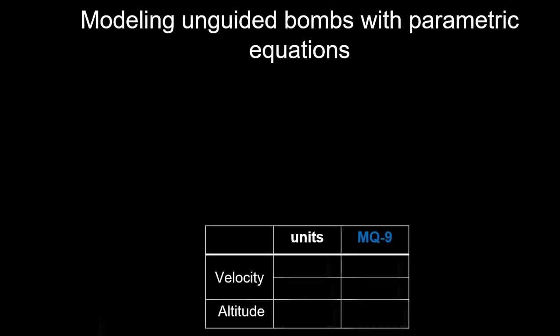So first, a couple stats for an MQ-9. Typical velocity would be around 180 miles per hour. We're going to go ahead and convert that into feet per second because that's going to be more convenient for us unit-wise. So it's going to be 264 feet per second. And a typical altitude for MQ-9 would be around 25,000 feet. So we'll go ahead and use that.